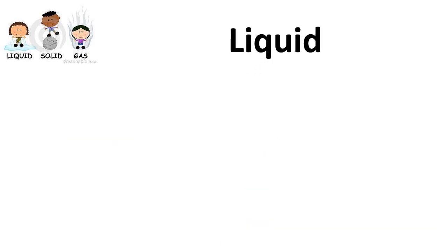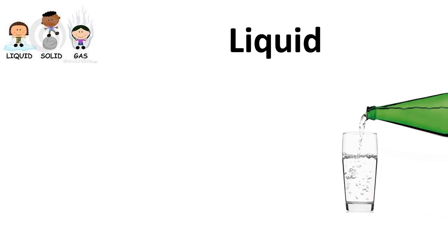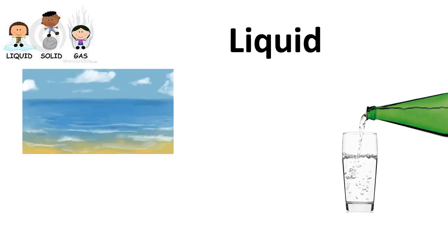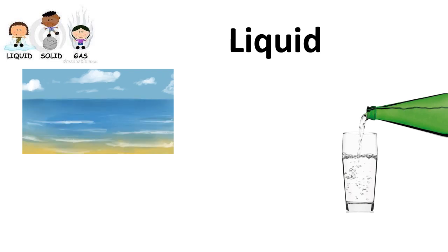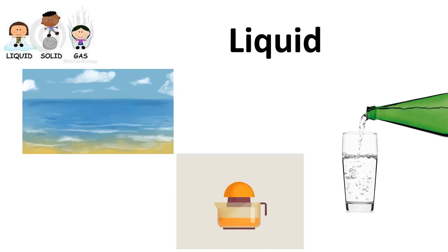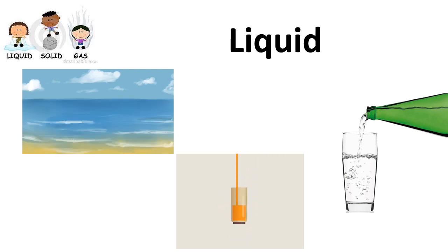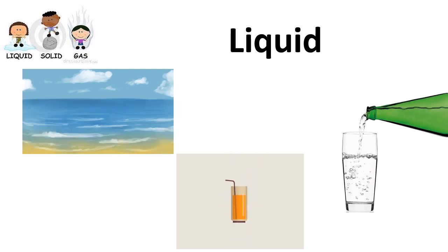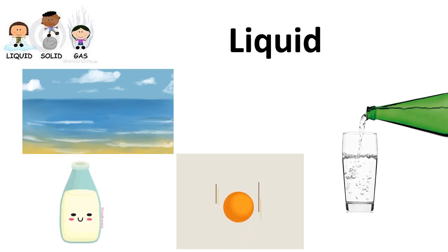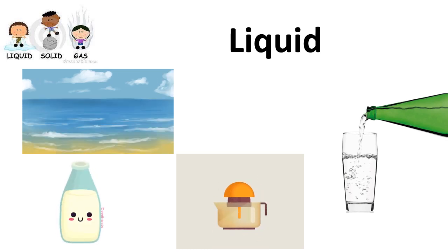What matters come in a liquid state? We have water — water is liquid. The sea is made up of water, which is liquid. Orange juice is also liquid, and the milk we drink is a liquid.